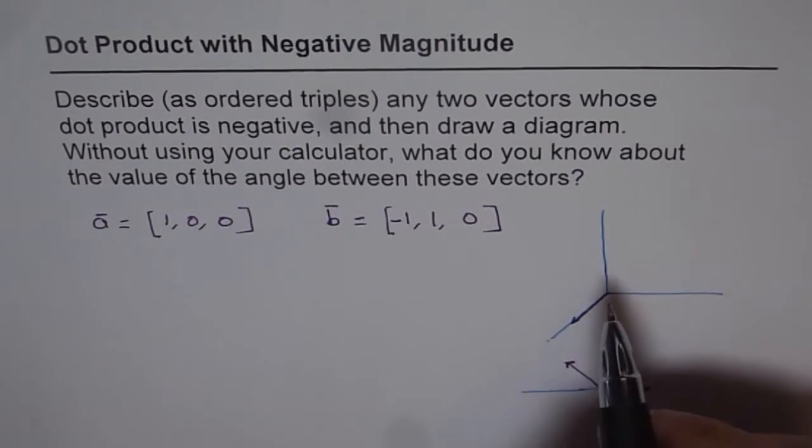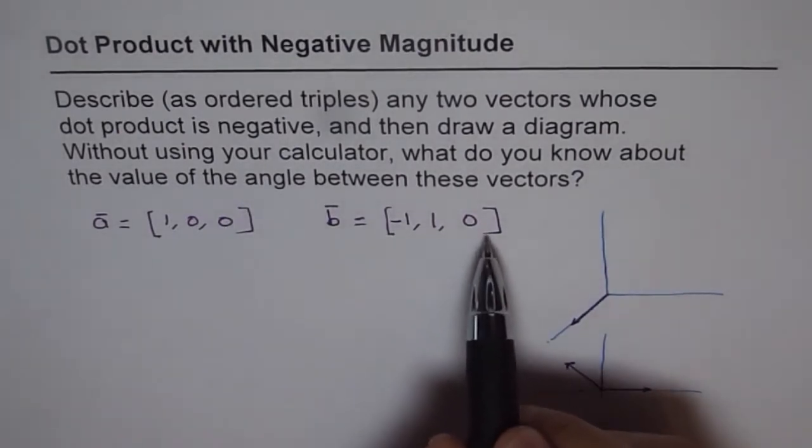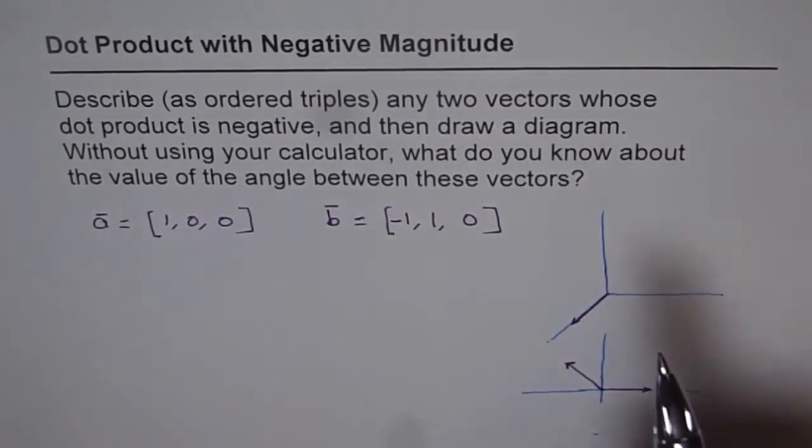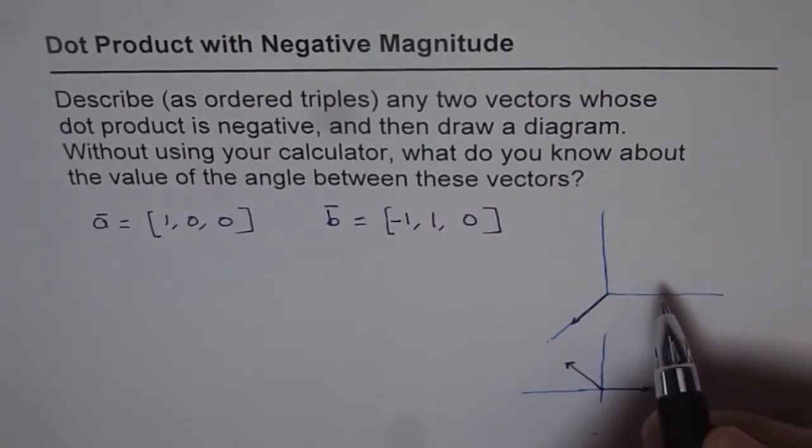Do you see that part? So that is my vector b. I'm not trying to complicate it. It's a triple, so I'm just keeping that z as 0. So I have a vector in this plane itself.